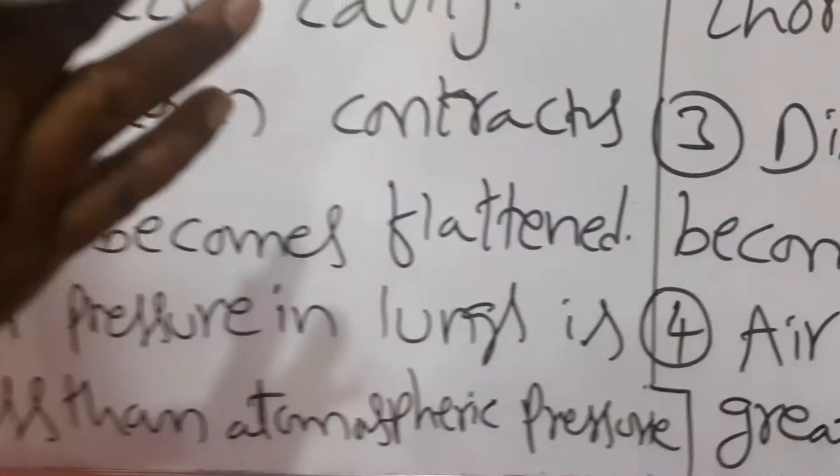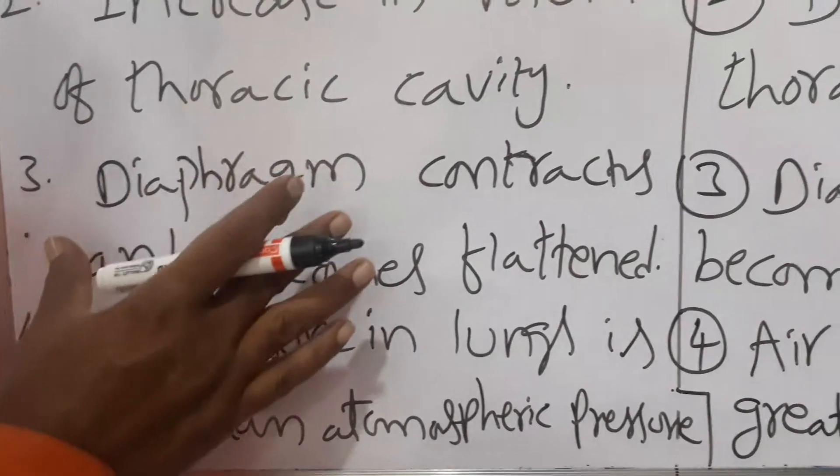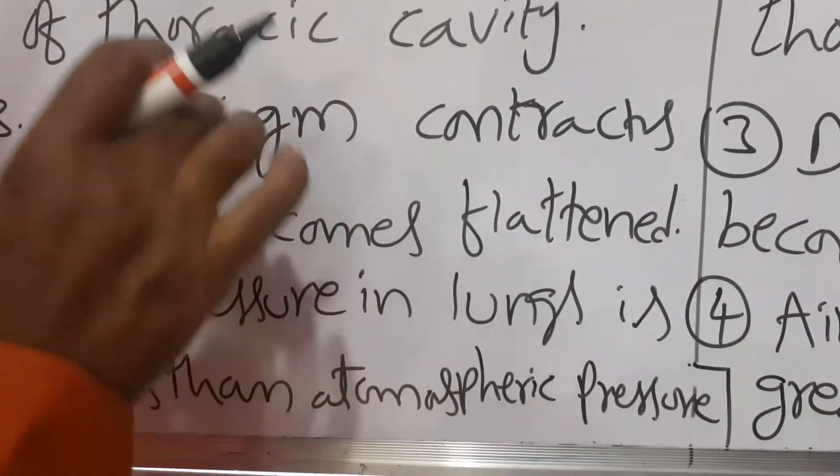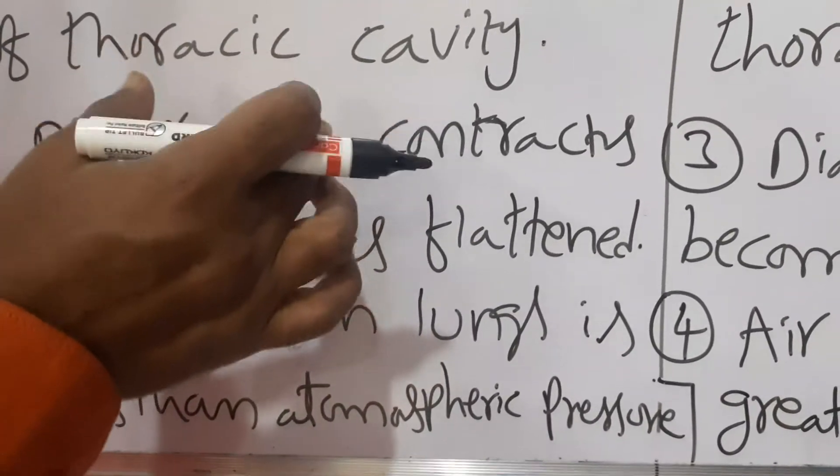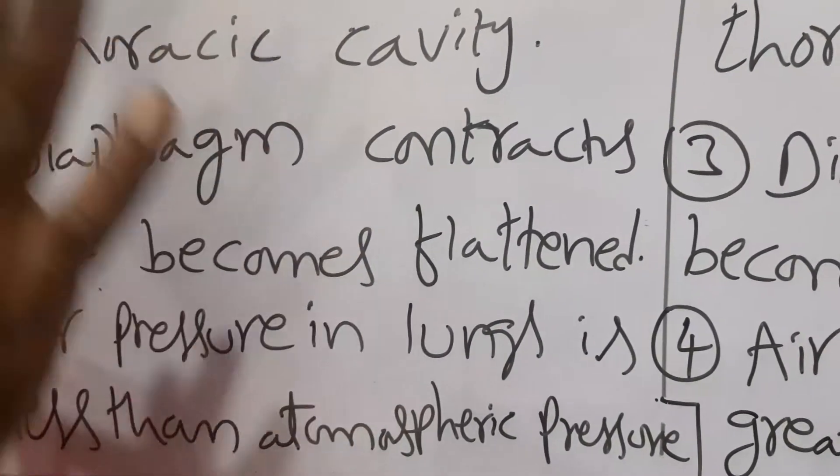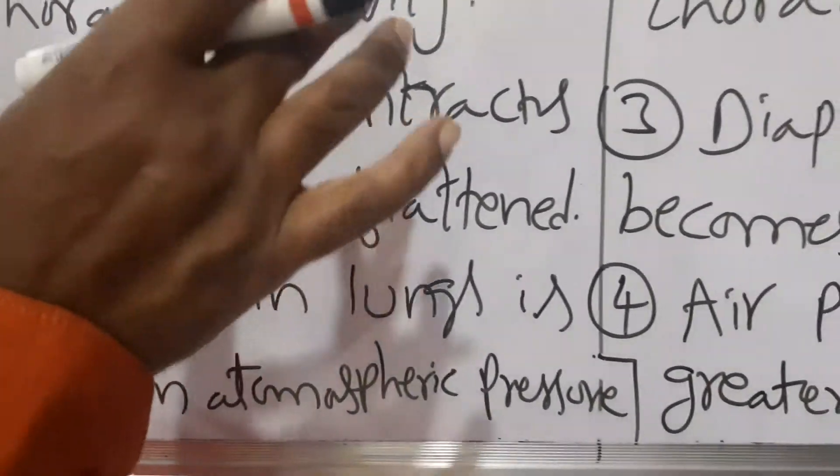Diaphragm is a flexible muscular structure. Diaphragm separates the thoracic cavity or chest cavity from abdominal cavity. Thoracic cavity means chest cavity.